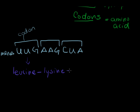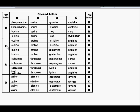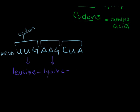Our last codon is CUA. Go back to our chart: first letter C, second letter U. Actually, anything that starts with CU — any codon starting with C and U — is going to code for leucine. So CUA is again leucine.